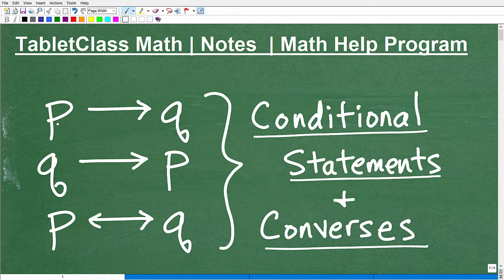And then here we have the arrow going in both directions. This is the notation or symbology that we're going to be using to discuss conditional statements and converses. If this struck your eye, like you're studying this stuff, this is what we're going to be talking about.